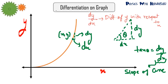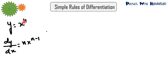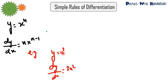Now we will understand how to find dy by dx. I won't go into the derivation — I'll just tell you how to solve the questions. If y is equal to x raised to the power n, then dy by dx will be equal to n times x to the power n minus 1. The power comes forward and you subtract 1 from the power. For example, if y equals x cubed, then dy by dx equals 3x squared.